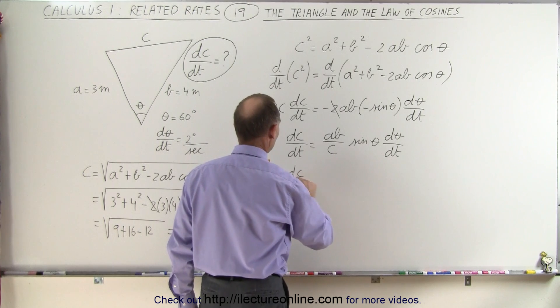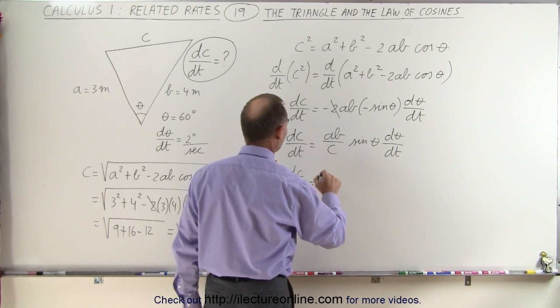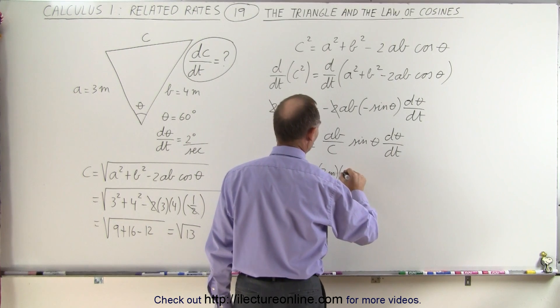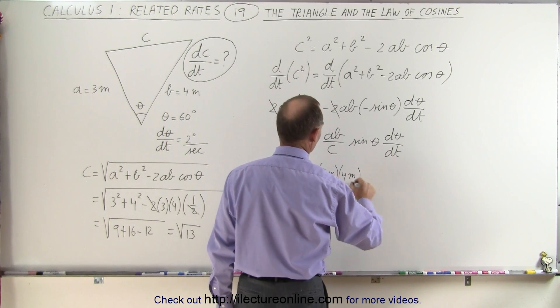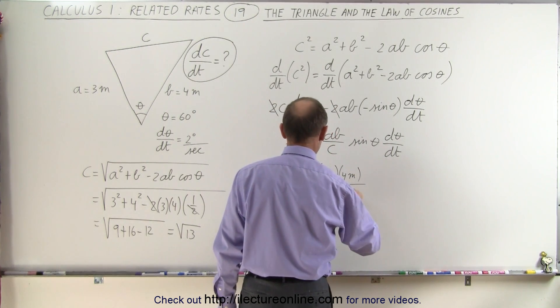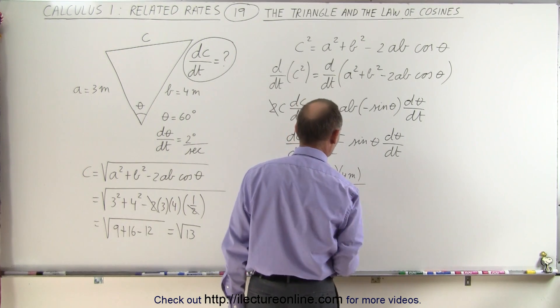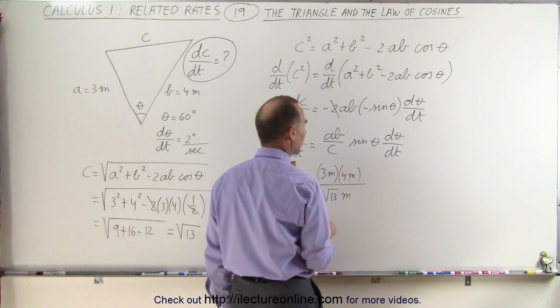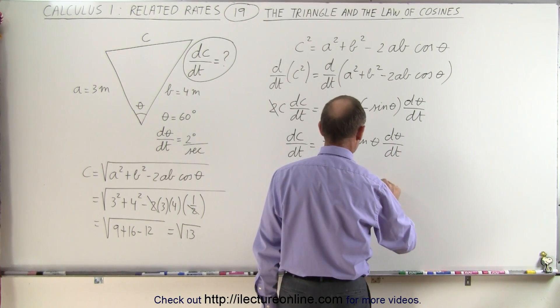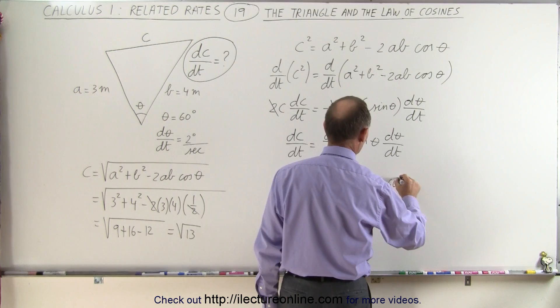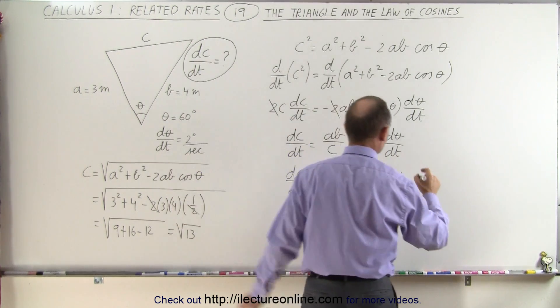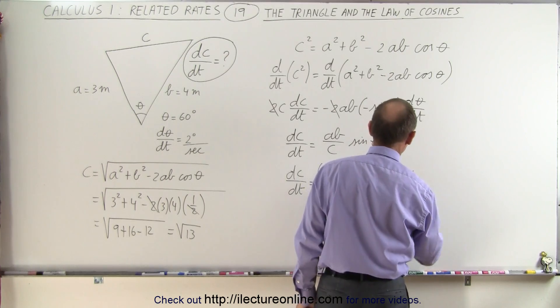The rate of change of C with respect to time equals A, which is 3 meters, times B, which is 4 meters, divided by the square root of 13 meters, so one of the meters cancels out, which leaves 1 meter here, times the sine of theta, the sine of 60 degrees, times the rate of change of the angle with respect to time, which is 2 degrees.